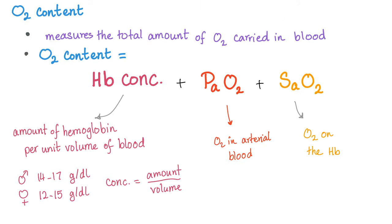The arterial blood gas is really important because it helps you measure all of this. Oxygen content measures the total amount of oxygen carried in the blood. Oxygen content depends on three things: hemoglobin concentration, PaO2 in the arterial blood, and SaO2 — oxygen on the hemoglobin. This is not a mathematical equation to just add these numbers — it's a conceptual framework. A problem with hemoglobin concentration is called anemia. A problem with PaO2 is called hypoxemia. A problem with SaO2 is called decreased oxygen saturation.